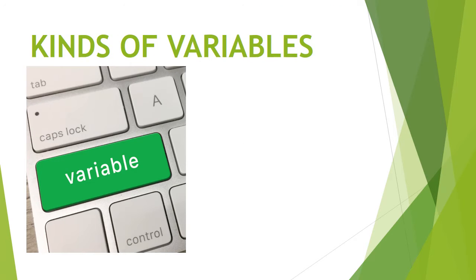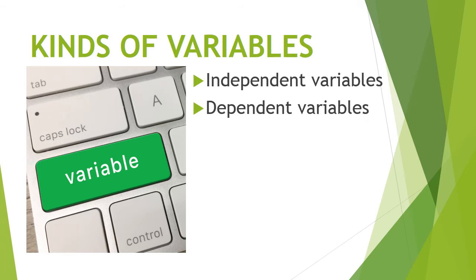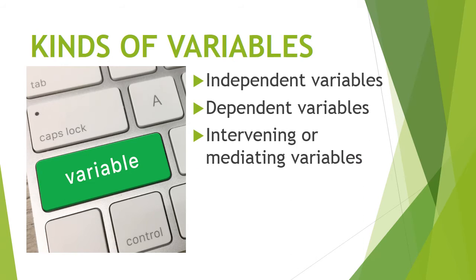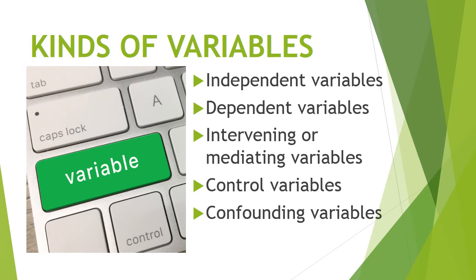Several experts have lumped together the following as the major kinds of variables: independent variables, dependent variables, intervening or mediating variables, control variables, and confounding variables. Let us discuss them one by one.